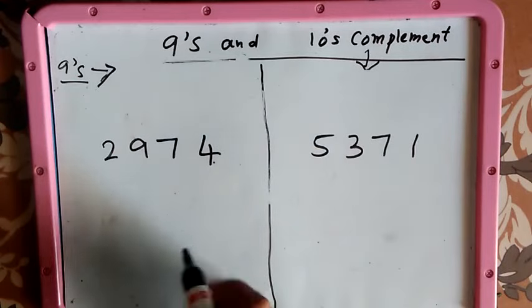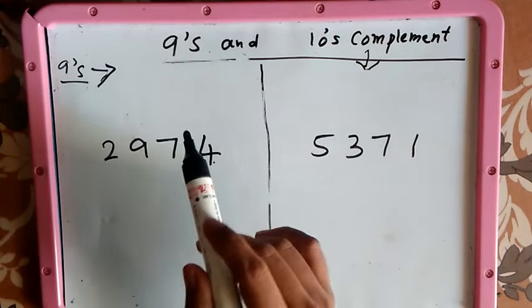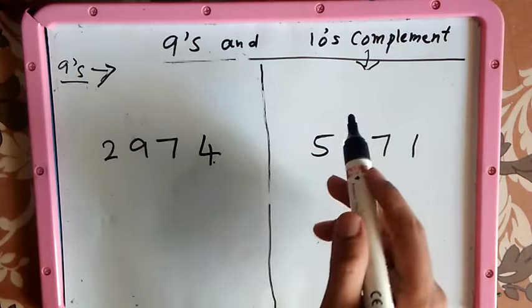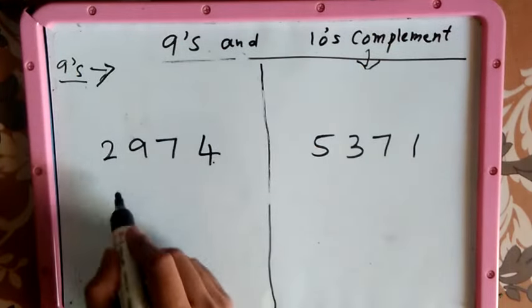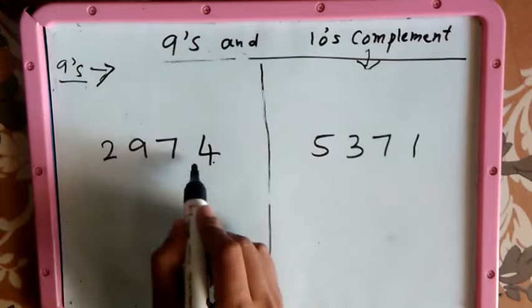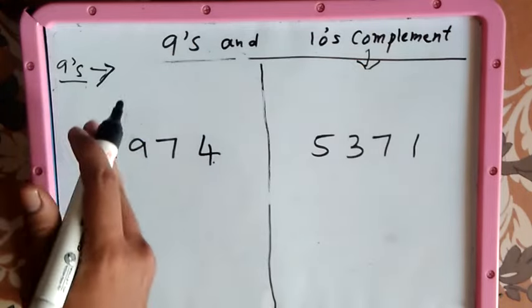Hello everybody, today we are going to see a short lecture on how to find the 9's and 10's complement of a given decimal number. We have a given decimal number 2974, so we are going to find out the 9's complement of this number.